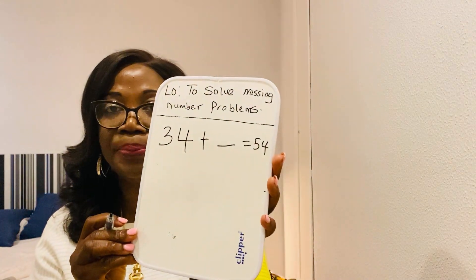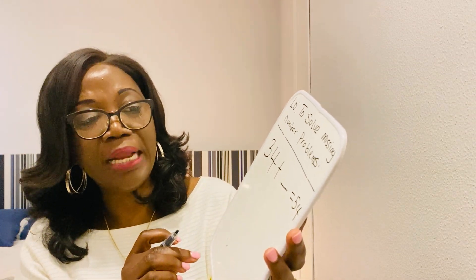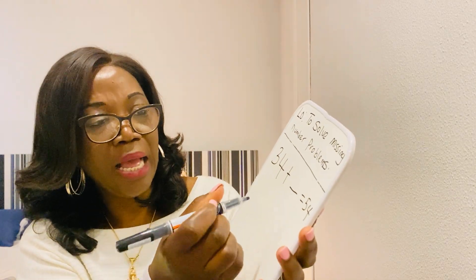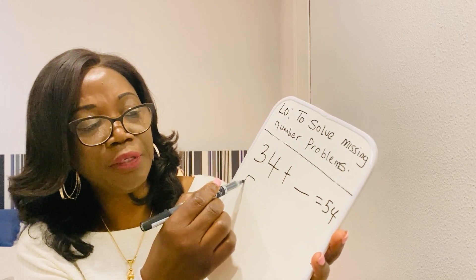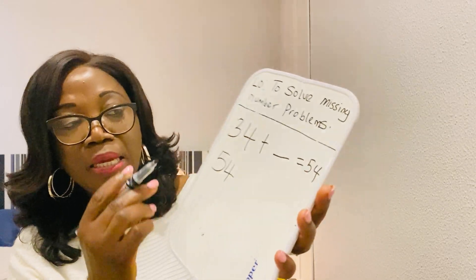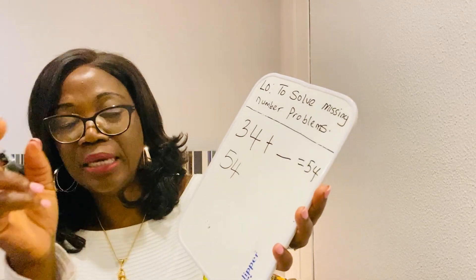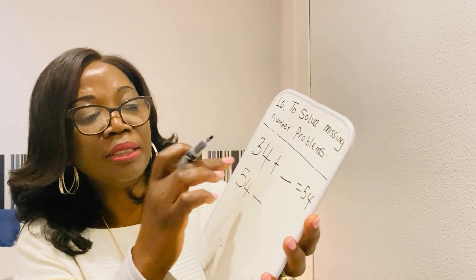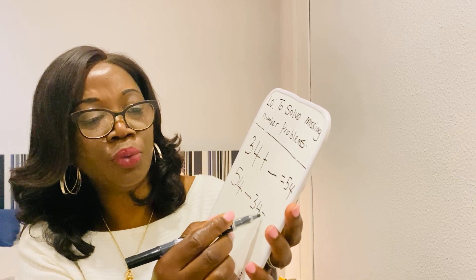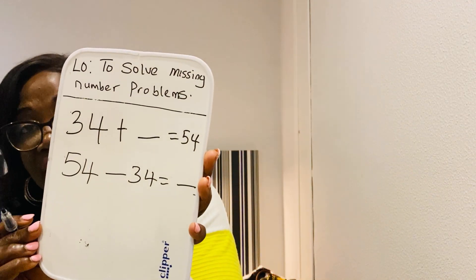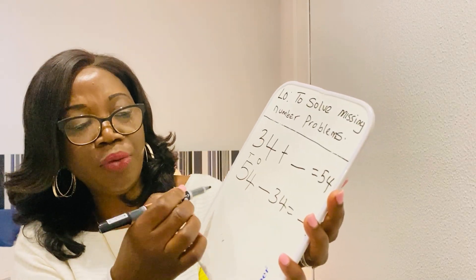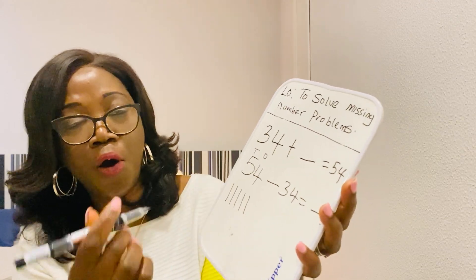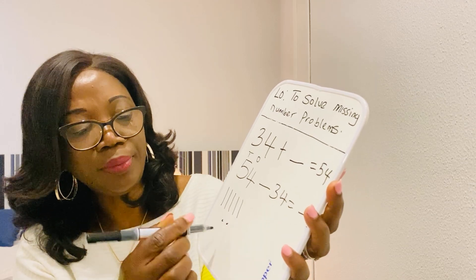Opposite of addition is subtraction. So you rewrite that in subtraction to help yourself, and always remember you start with the biggest number because we are subtracting. And remember, we start with the big number 54. Should we write add or take away? Yes — because we're doing the opposite, we are rewriting the sentence. Take away 34 equals — we're not sure. So we write it like that. Then we draw our tens and units. We draw five tens: 10, 20, 30, 40, 50, and four ones: 1, 2, 3, 4.